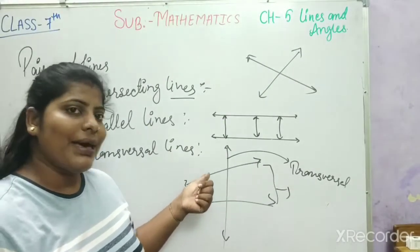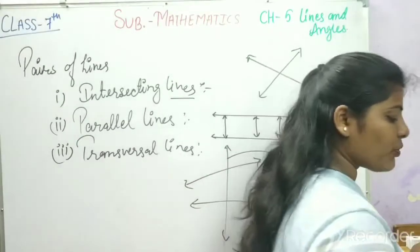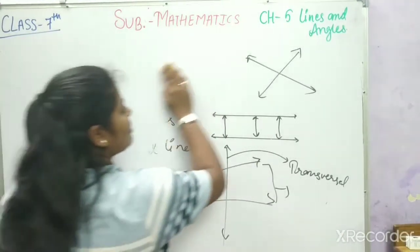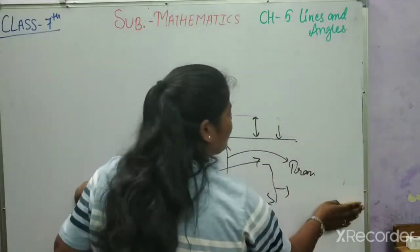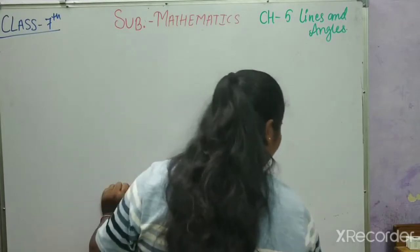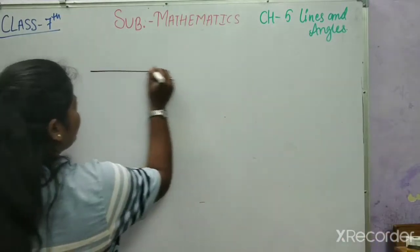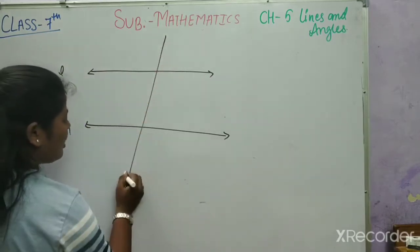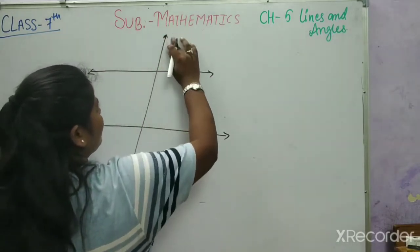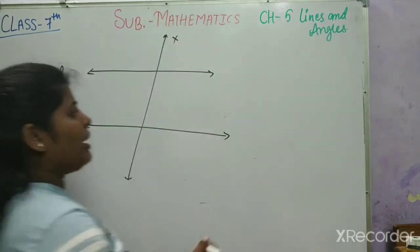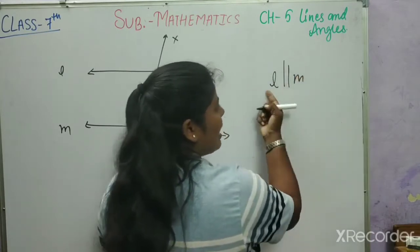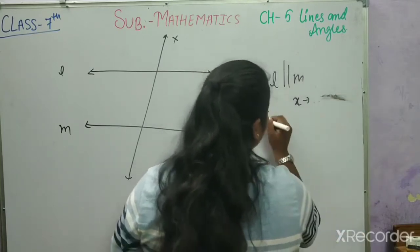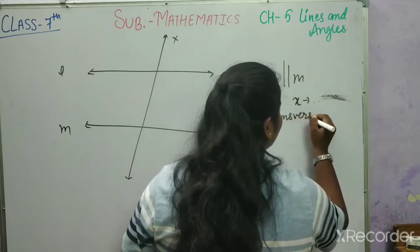We will now look at properties of parallel lines and transversal lines. The definition has been provided and I will discuss it in our notes. Now we will start the next exercise — properties of parallel lines and transversal. Here are two parallel lines, line m and line n, and x is the transversal line.